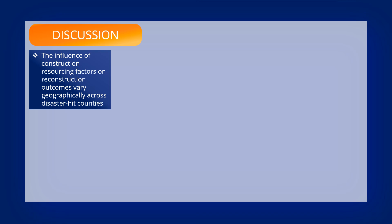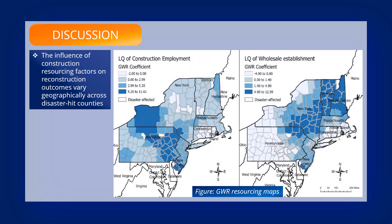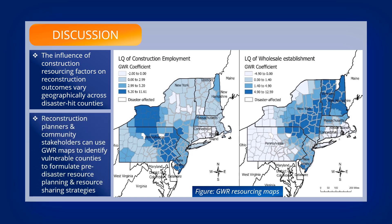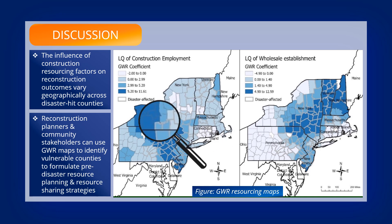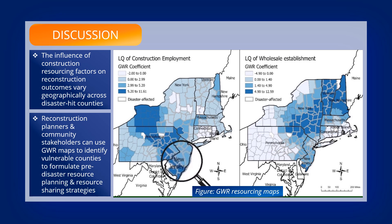The findings show that an increase in pre-disaster regional labor and material resources helped in the swift post-disaster housing reconstruction. The GWR model informed us for the first time that the influence of construction resourcing factors on housing reconstruction outcomes varied geographically across disaster-affected counties. GWR maps revealed that in most disaster-affected counties, housing reconstruction outcomes were strongly influenced by pre-disaster construction labor employment and material wholesale establishment. Also, resources located in neighboring counties are crucial in shaping reconstruction outcomes in adjacent disaster-affected counties. Construction resources are limited, so instead of focusing on the entire region, reconstruction stakeholders can use GWR maps to identify counties more vulnerable to reconstruction delays resulting from inadequate availability of construction resources. Vulnerable counties are those where GWR coefficients are the strongest, such that any change in pre-disaster regional labor and material availability will have very strong repercussions on reconstruction outcomes.